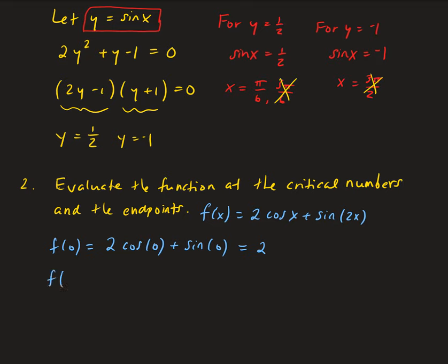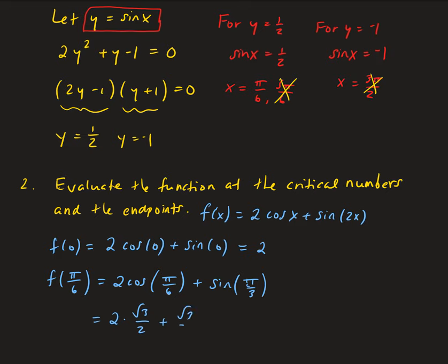At the critical number x = π/6: f(π/6) = 2cos(π/6) + sin(π/3) = 2(√3/2) + (√3/2) = 3√3/2.